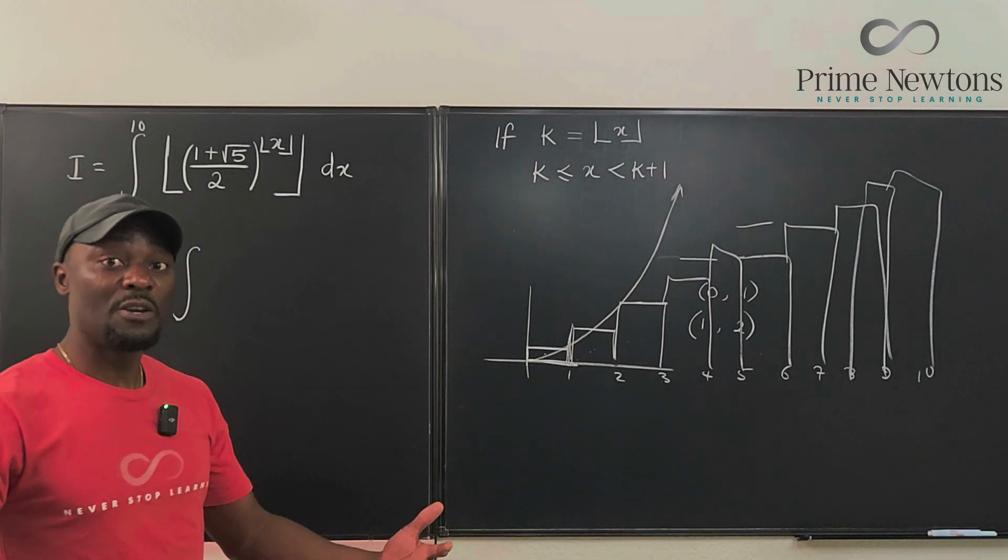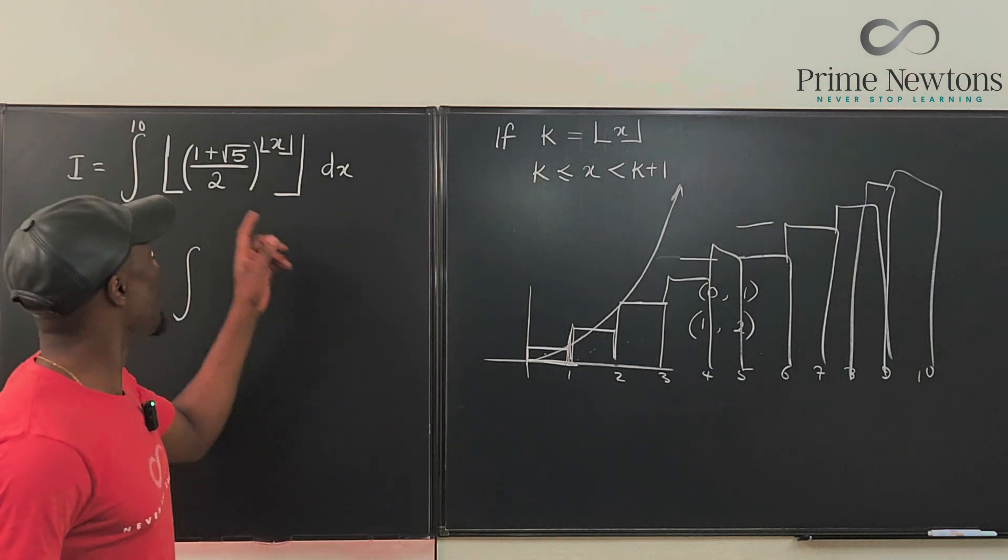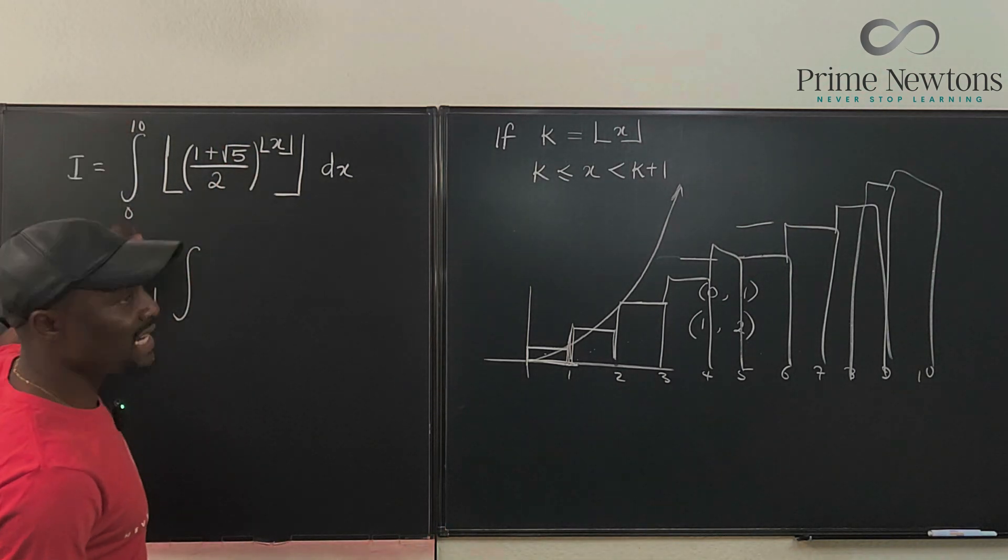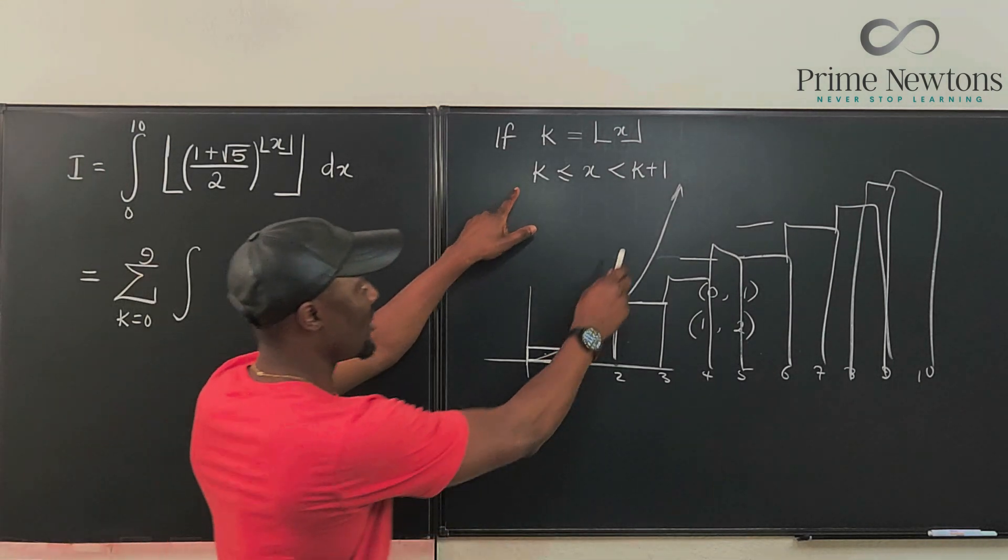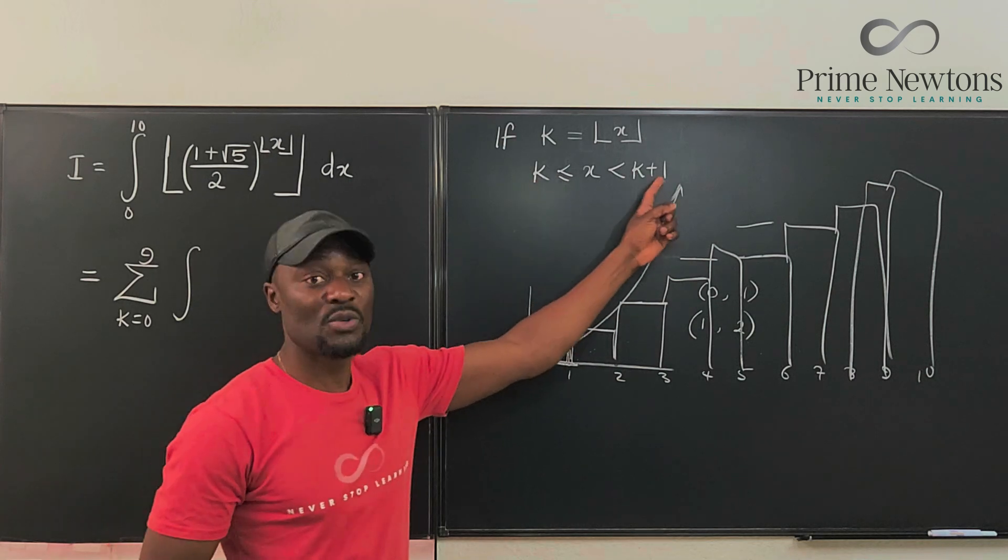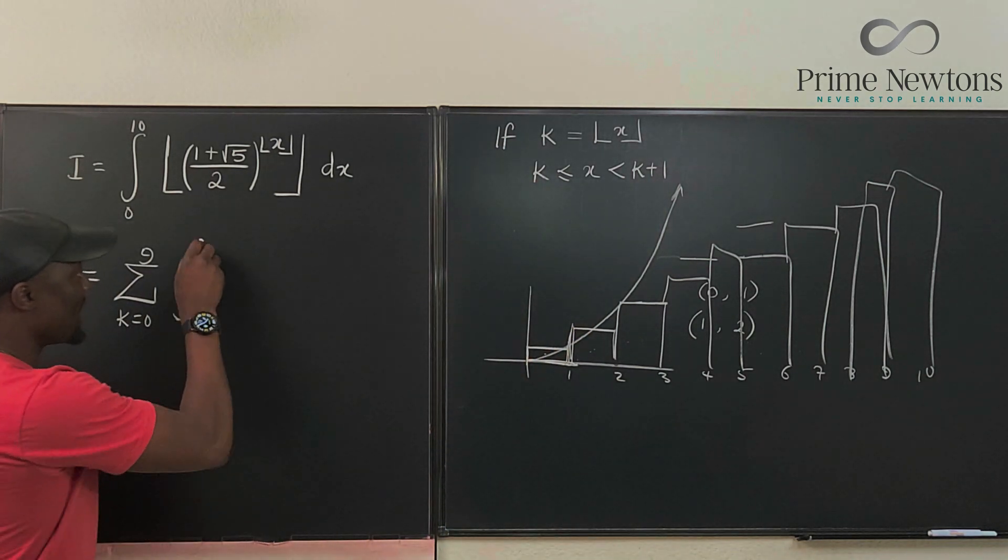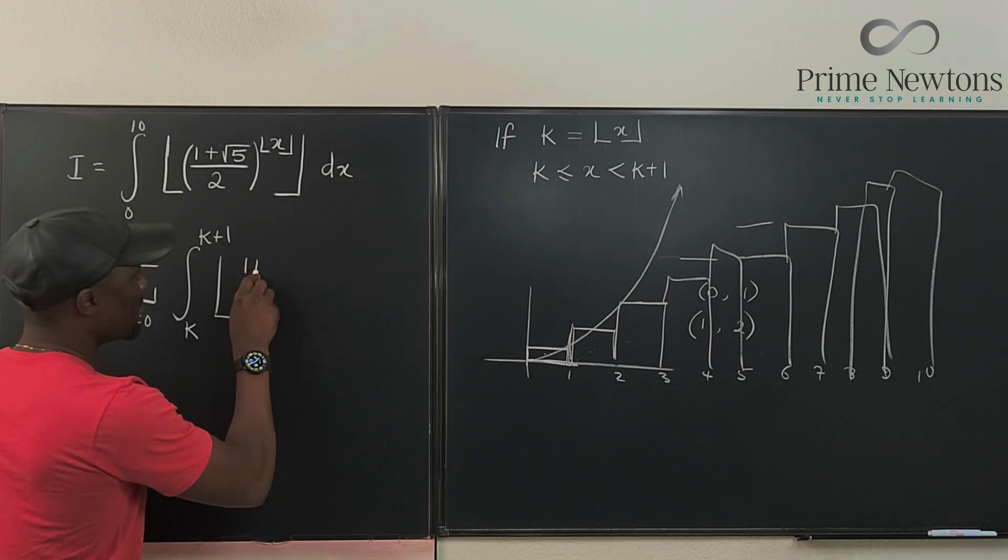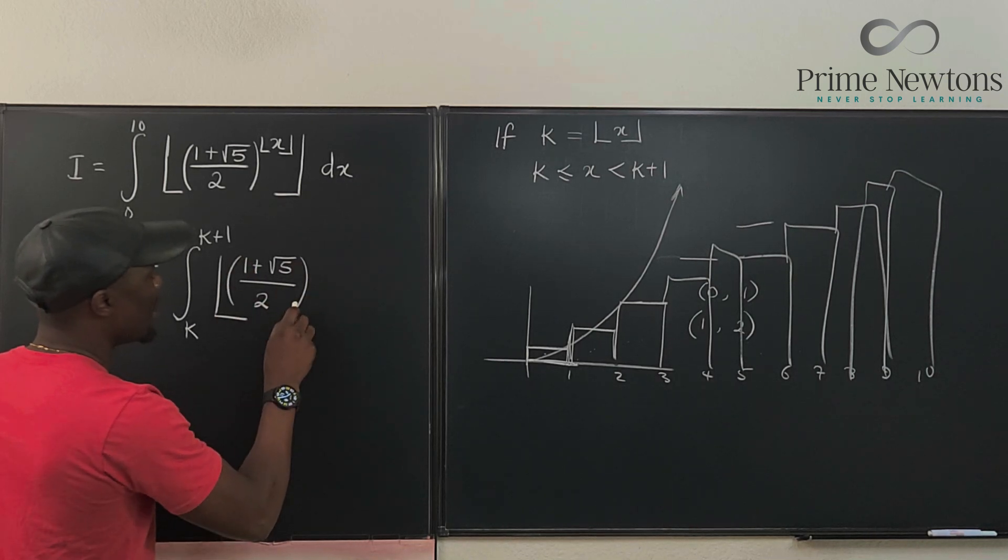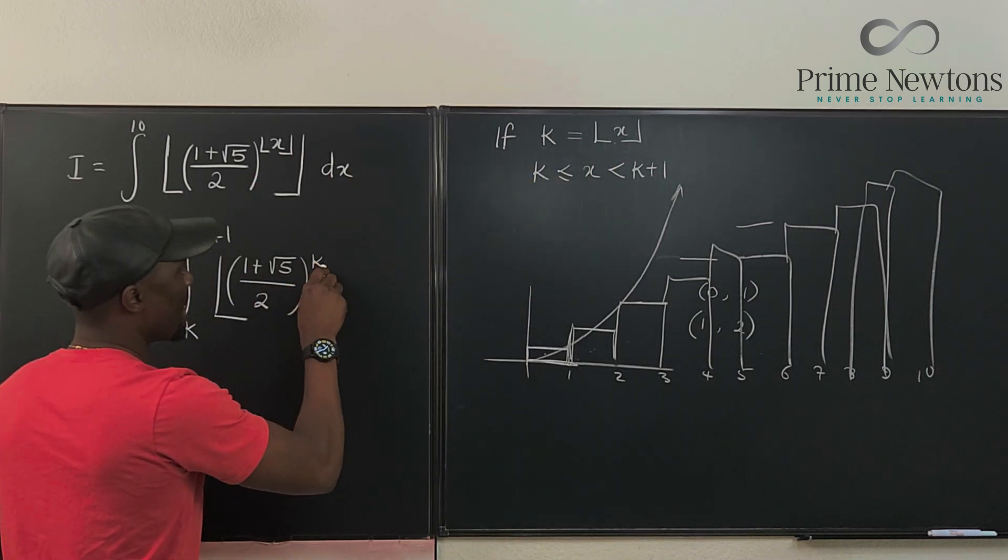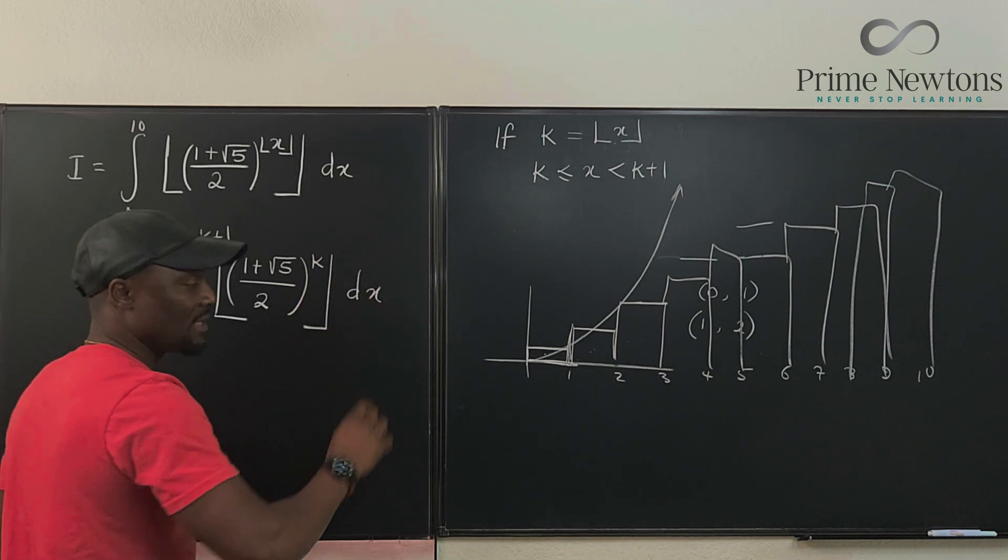Now the values of X we're going to be integrating, instead of going from zero to 10, the values of X that we're dealing with are now from K to K plus one. So what you have here is going to be K and this is K plus one. And what you're integrating is the floor of one plus square root of five over two raised to power, what is now this floor? We've defined it to be K. It is still DX.